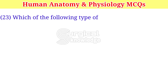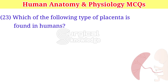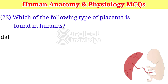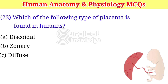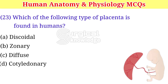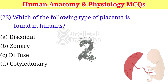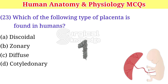Which of the following type of placenta is found in humans? A. Discoidal. B. Zonary. C. Diffuse. D. Cotyledonary. Right answer is discoidal.